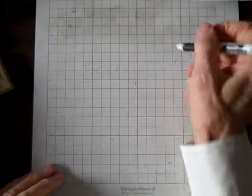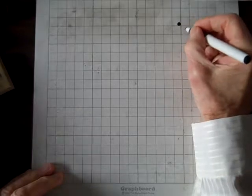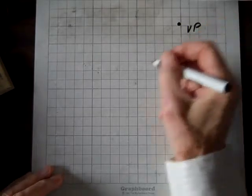Well, let's do one more perspective drawing. Let's see, we'll pick a vanishing point, put it right there, VP for vanishing point.